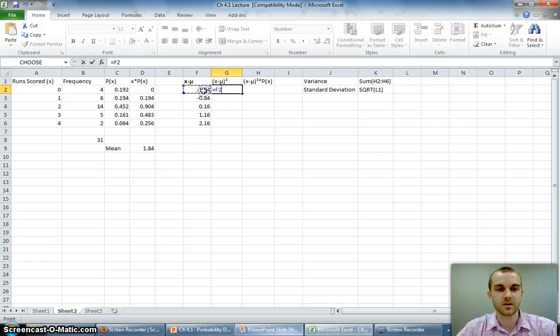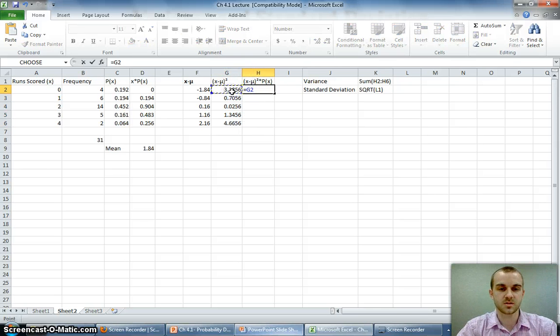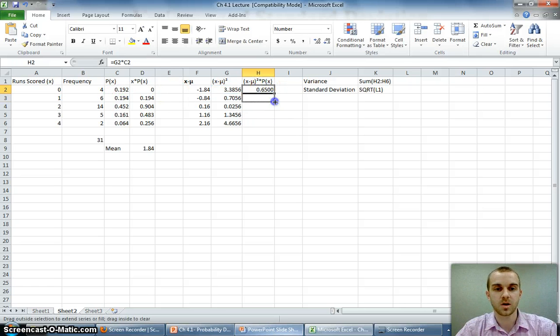Next, I take my value I just found and I square it using Shift 6 to get the caret key. I put a 2, and I'm going to drag it down and get all the values. Now I'm going to take my squared term and multiply it by the probability of that event occurring.